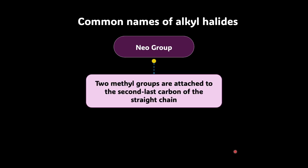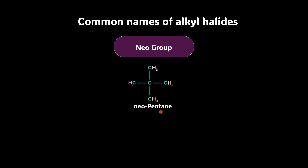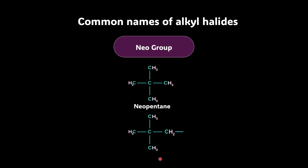For the neo group, you should have two methyl groups — not one, but two — attached to the second last carbon of the straight chain. When discussing hydrocarbons, we have seen neopentyl. This second carbon, which is the second last carbon, has two methyl groups, so the name is neopentyl. If we remove one hydrogen, we get a neopentyl alkyl group, and if I attach an iodine to it, the name is neopentyl iodide.